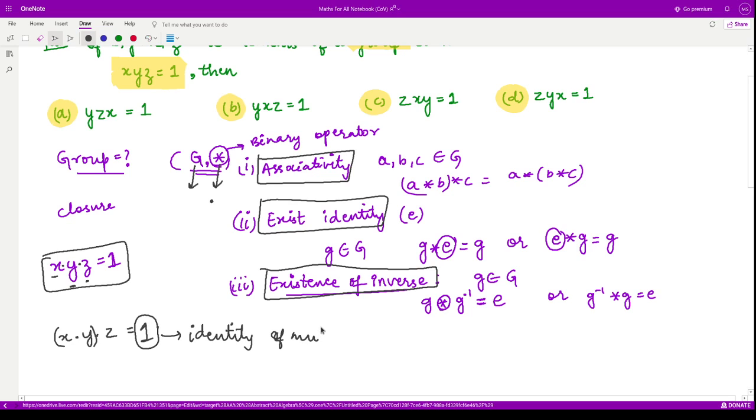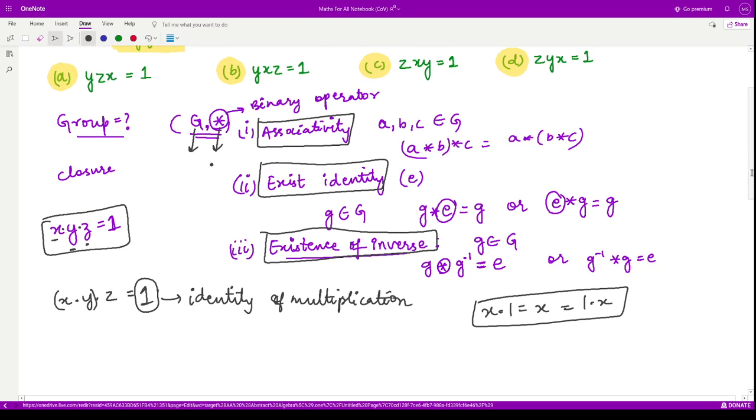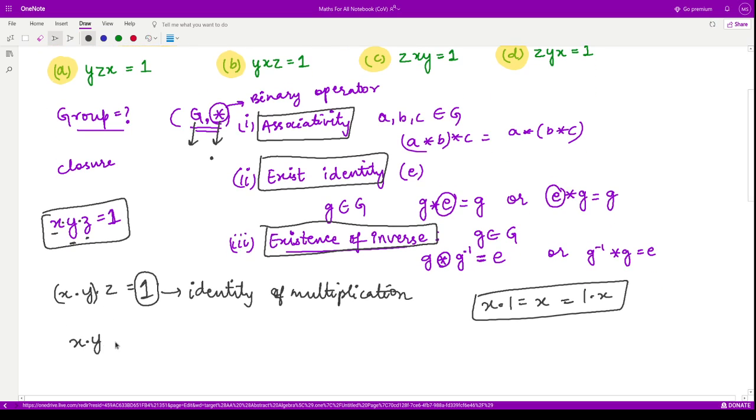Do you know what this one is? One is the identity of multiplication, the multiplicative identity. Because when you multiply any element by one you get that element back. Now from here we can conclude that x into y inverse is equal to z. That means when you multiply these two you get the identity operator back. In other words, you can also write this as z into xy equals one, because they are inverses of each other. If xy is the inverse of z, then z inverse is also xy. So we have zxy equals one. This is the third option.